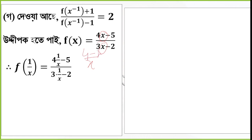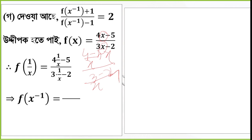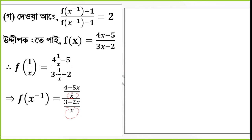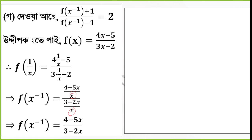So f of x inverse is equal to (4 minus 5x) by (3 minus 2x). We will talk about f of x inverse plus 1 is equal to (4 minus 5x) by (3 minus 2x).